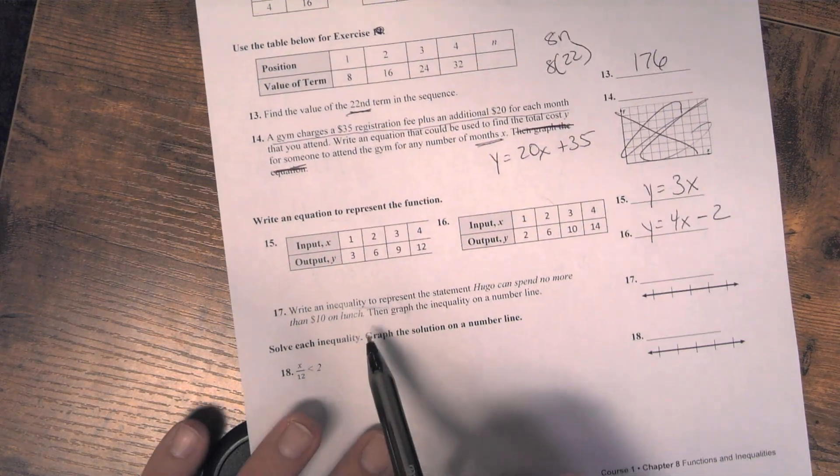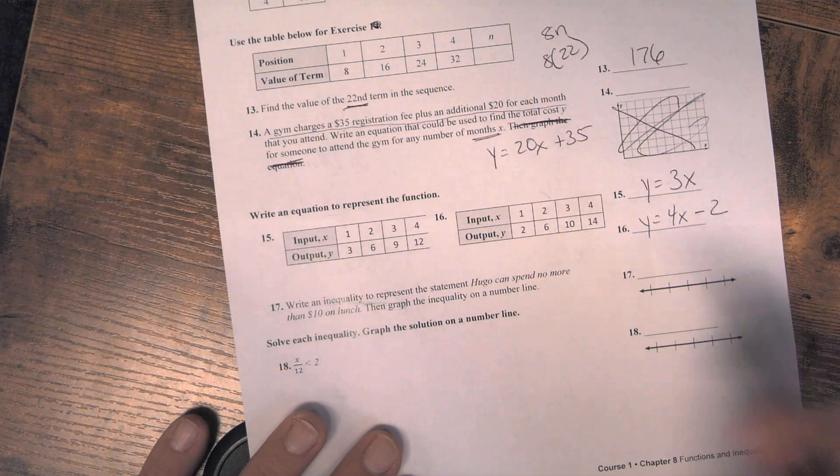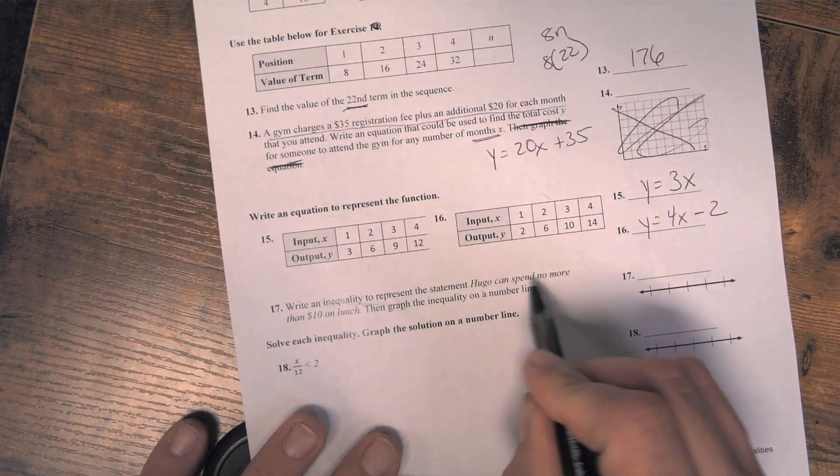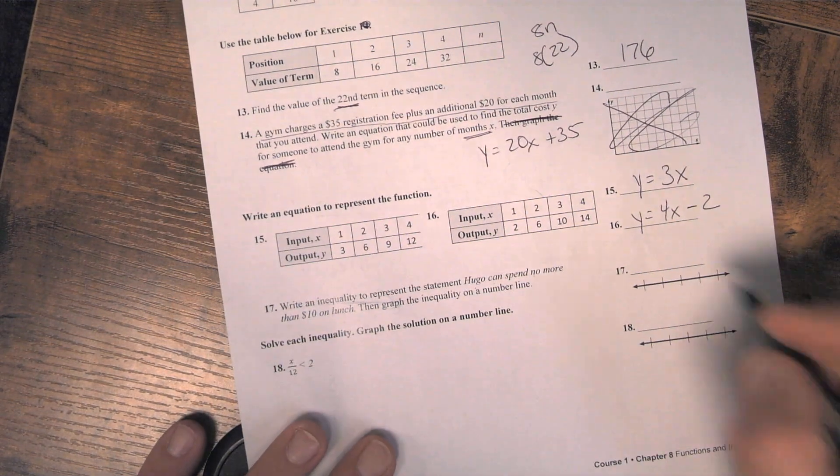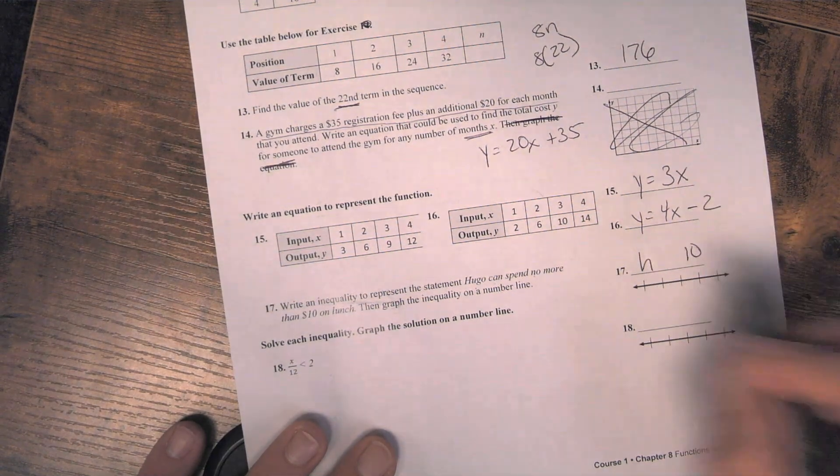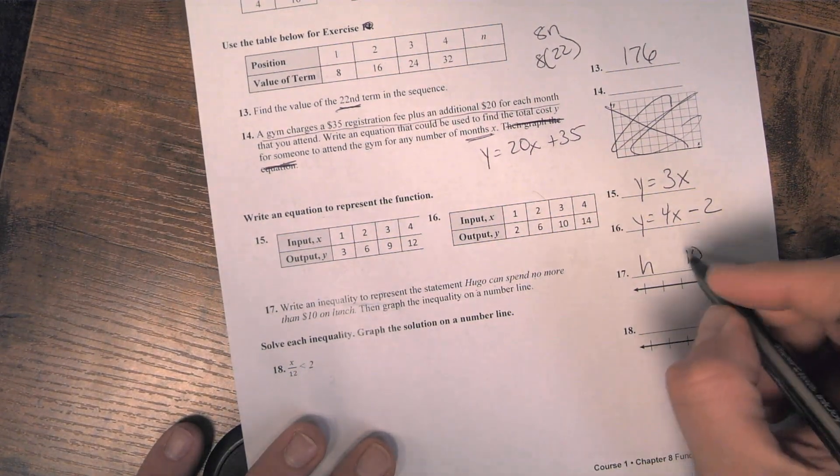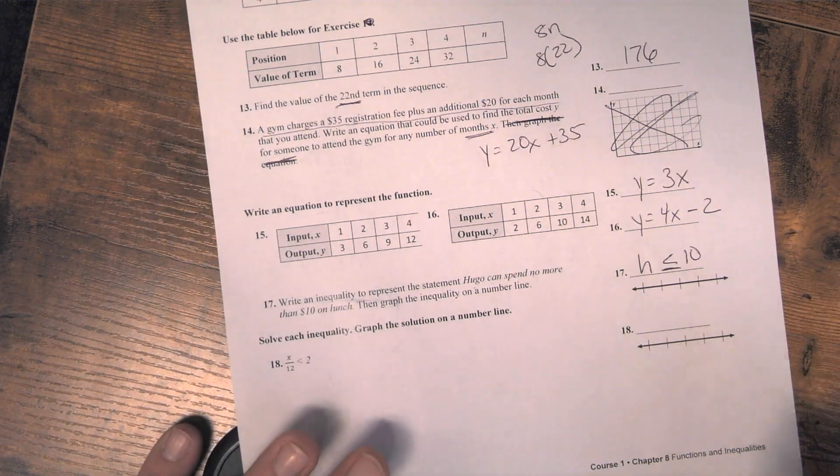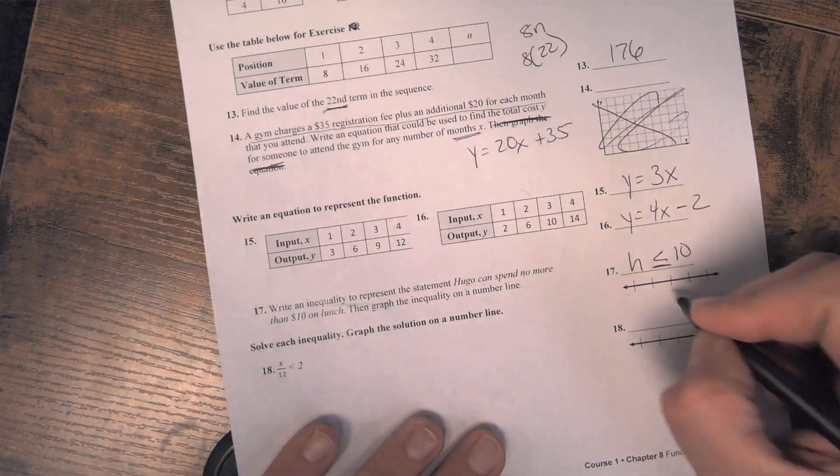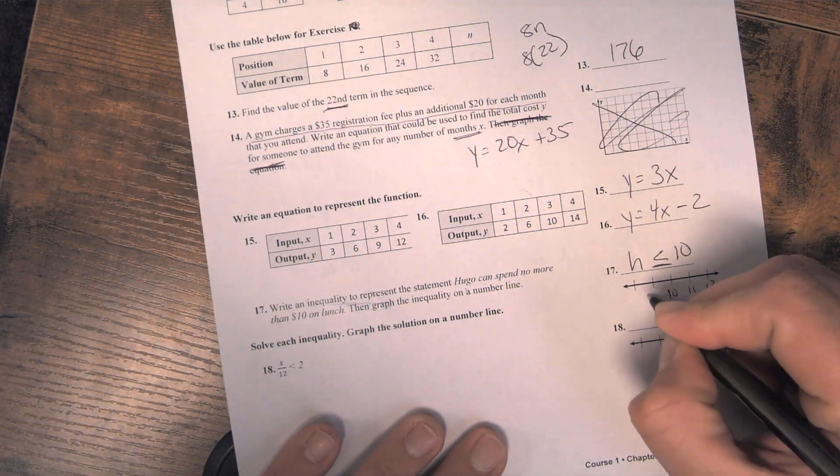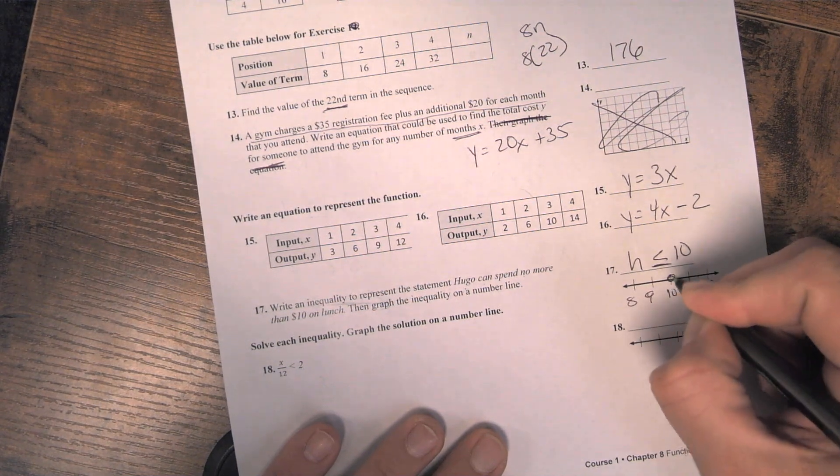17, you are writing an inequality and then graphing it. So Hugo can spend no more than $10. So H represents Hugo. So if he can spend no more than that, he can spend $10, but everything less than that. So then you graph it. It's a dot. And we're going to the left because it's less than.